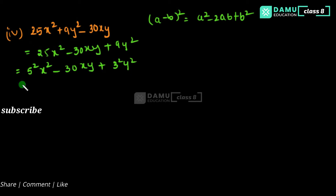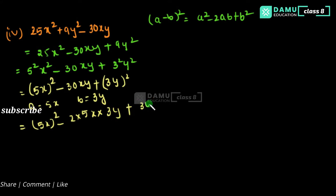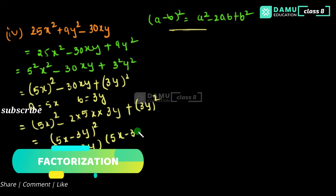Writing as (5x) whole square minus 30xy plus (3y) whole square, we check: a equals 5x, b equals 3y, and 2ab equals 2 into 5 into 3, that is 30xy — confirmed. So this matches a squared minus 2ab plus b squared. The answer is (5x − 3y) whole square, which equals (5x − 3y) into (5x − 3y).